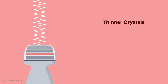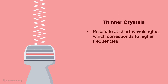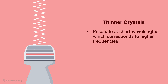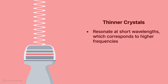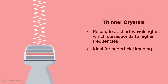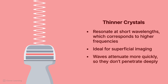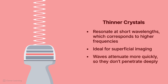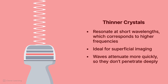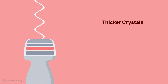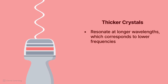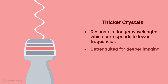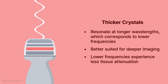A thinner crystal has a smaller physical size and naturally resonates at shorter wavelengths, which corresponds to higher frequencies, making thinner crystals ideal for imaging superficial structures like the thyroid. However, these waves also attenuate more quickly, meaning they don't penetrate deep into tissue. A thicker piezoelectric crystal has a larger physical size, so it resonates at longer wavelengths, which corresponds to lower frequencies, making it better suited for imaging deeper structures like the liver or kidneys because lower frequencies experience less tissue attenuation.